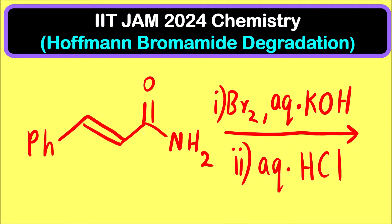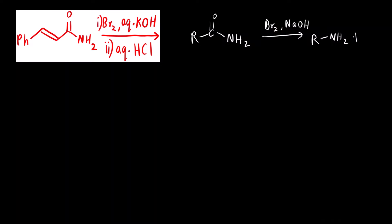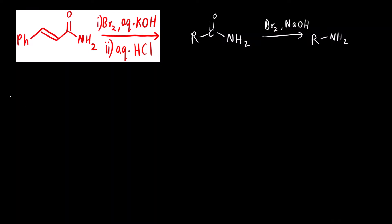What basically happens in this name reaction: an amide (R-CO-NH₂) reacts in the presence of bromine and a base to form an amine. There is loss of carbon — the carbonyl group is lost. We will see the mechanism of how this occurs. This is the reactant that is given.